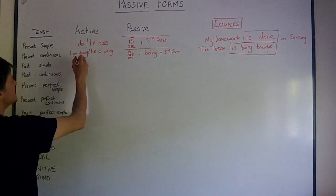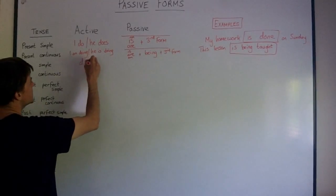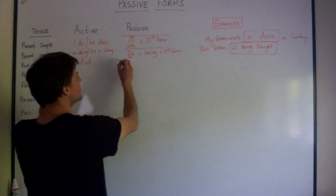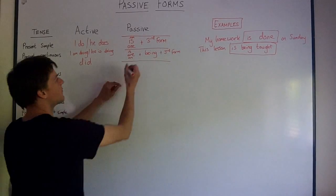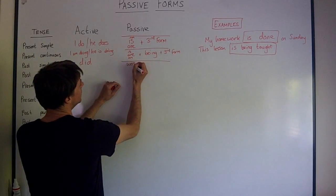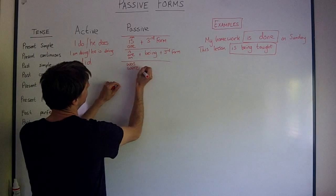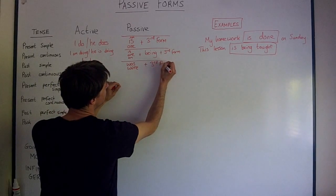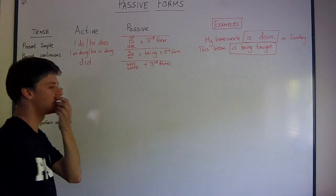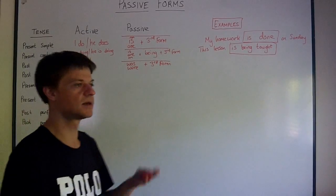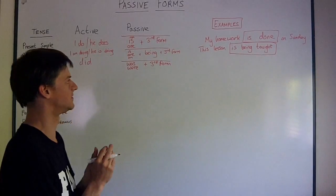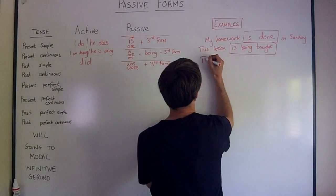Past simple would be did. I did, he did, they did. And in passive, we just have was or were plus third form. For example, this house was built by my grandfather. This house was built.